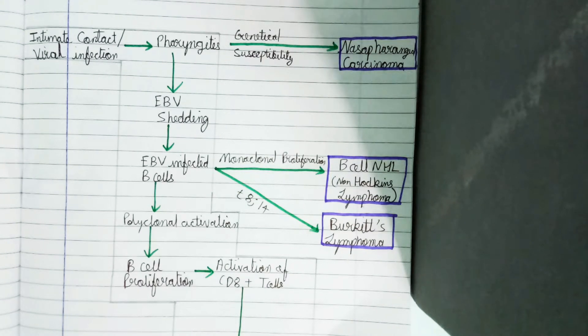Pharyngitis can lead to nasopharyngeal carcinoma when genetic susceptibility occurs in the cells, but as we are focused on infectious mononucleosis, it causes pharyngitis and then goes into the stomach and then blood.